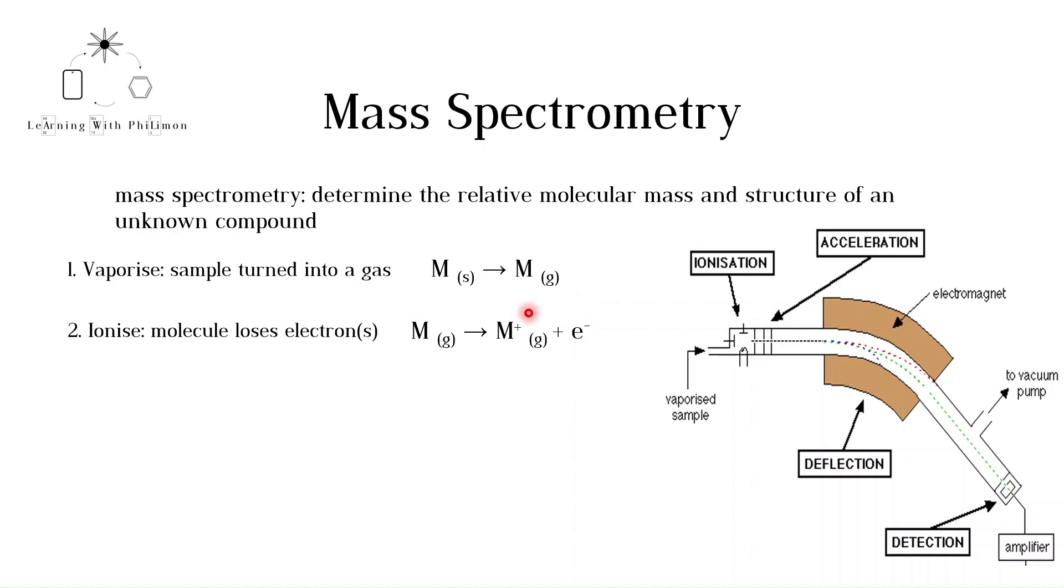The third step is to accelerate the ions. To do this, an electric field is used. The positive ions are attracted to the negatively charged plate. The electrostatic force of attraction causes the positive ions to accelerate.